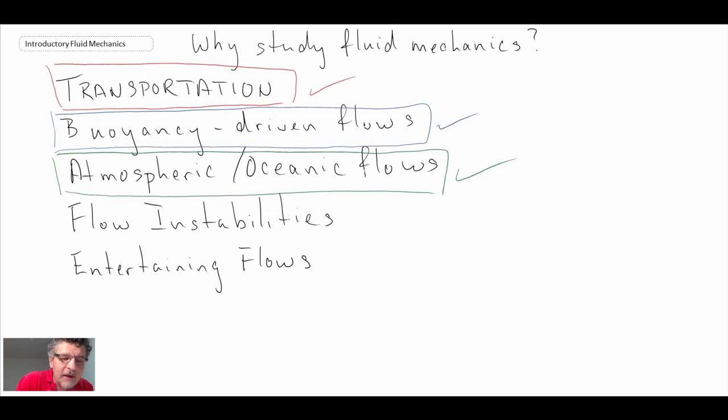The next one we're going to take a look at is flow instabilities. These are things that you don't always find. Once in a while you do, and it's kind of interesting when you do find them. I'll show you a couple of examples that I've come across over the years.